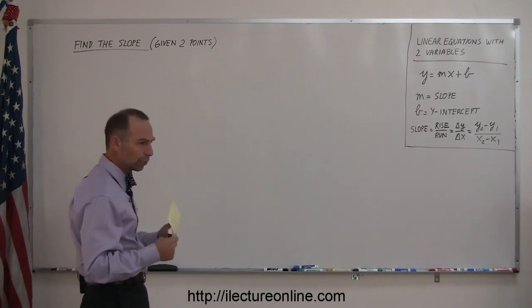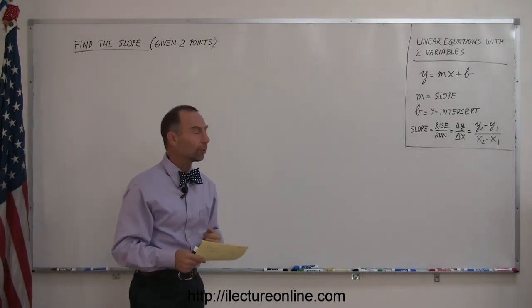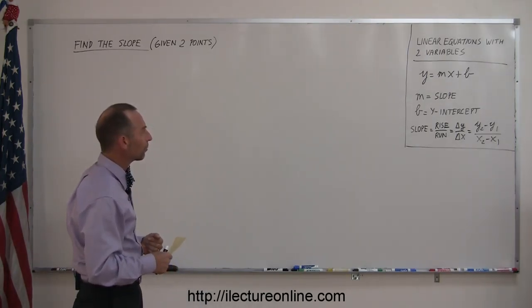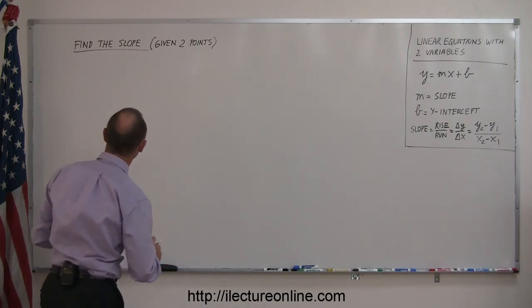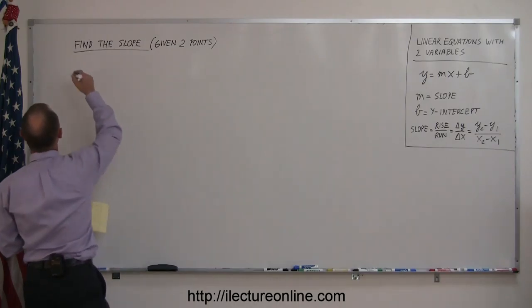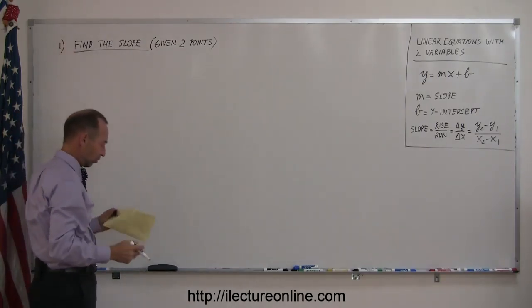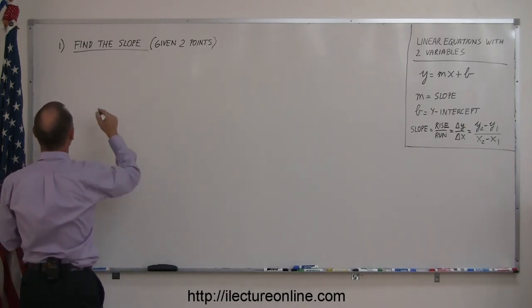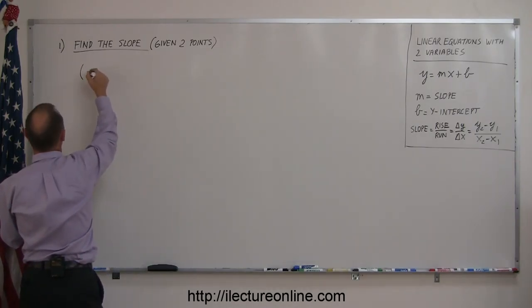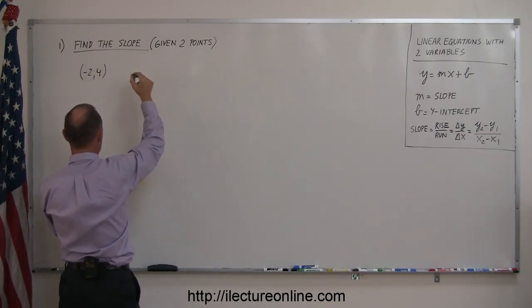So we're going to go through systematically a number of different types of problems you'll run into dealing with linear equations with two variables. Let's start with finding the slope given two points. Points usually are indicated with an x and a y value, so if I have the points minus two comma four and another point three and minus two.